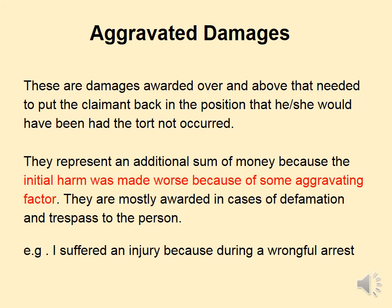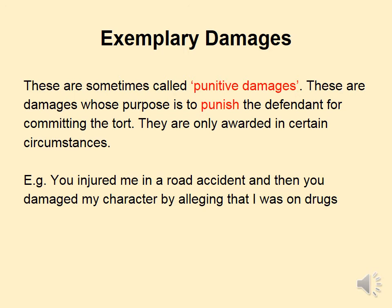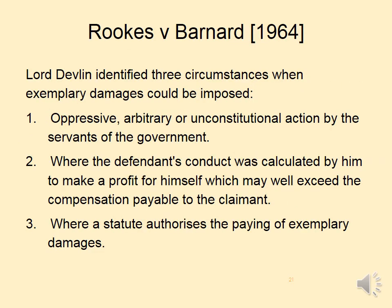Aggravated damages are awarded over and above that which is needed to put the claimant back into their original position, and represent an additional sum because the initial harm was made worse by some aggravating factor — for instance, if the defendant also defamed and trespassed against the person during the incident. Exemplary damages, sometimes known as punitive damages, are designed to punish the defendant for committing the tort and are only awarded in very specific circumstances. In Rookes v Barnard, Lord Devlin identified three circumstances: oppressive, arbitrary or unconstitutional action by servants of the government; where the defendant's conduct was calculated to make a profit; and where a statute authorises the paying of exemplary damages.